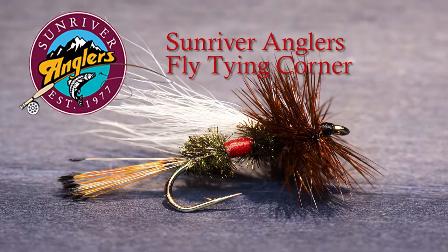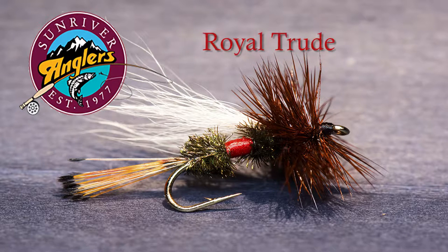Welcome to this month's Sunriver Anglers Fly Tying Corner. I'm going to tie a Royal Trude pattern today. This is a pattern that I use during the summer to imitate some of the large terrestrials that occur in Central Oregon.